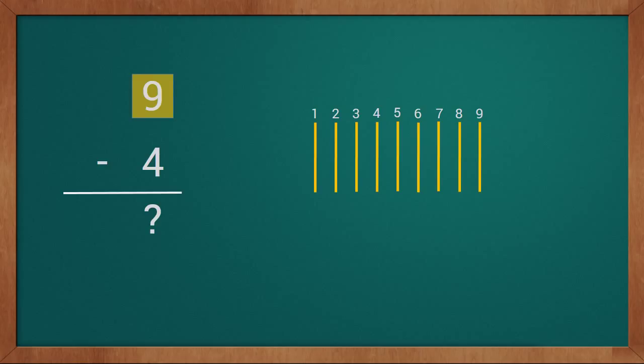We have a total of nine sticks. Our second value is four, so we will subtract or remove four sticks from these nine sticks: one, two, three, four. We remove four sticks.